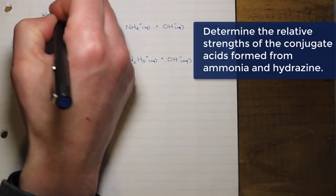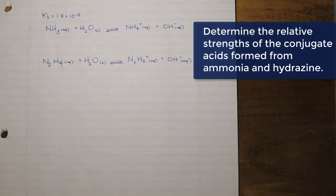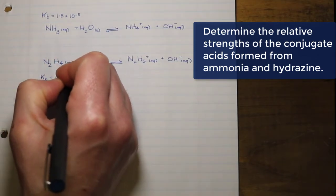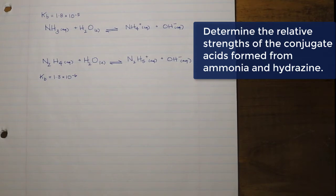In terms of their KBs, the KB for ammonia is 1.8 times 10 to the negative 5, while the KB for the hydrazine is 1.3 times 10 to the negative 6. We can see here that just by comparing the two KBs, the greater KB is going to indicate that the ammonia ionizes to a greater extent than the hydrazine does.